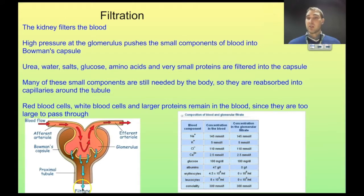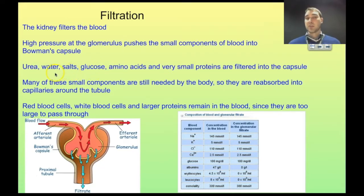These substances then travel along the tubule and some reabsorption of those products occurs. The reason is your body still needs a lot of those things that are being filtered out — your body needs glucose, which is the sugar your cells run on, it needs salts, water, and amino acids. Your body doesn't need urea — that's a waste product you're trying to get rid of. Your body also doesn't need all the water being filtered out, so this is where water balance happens.